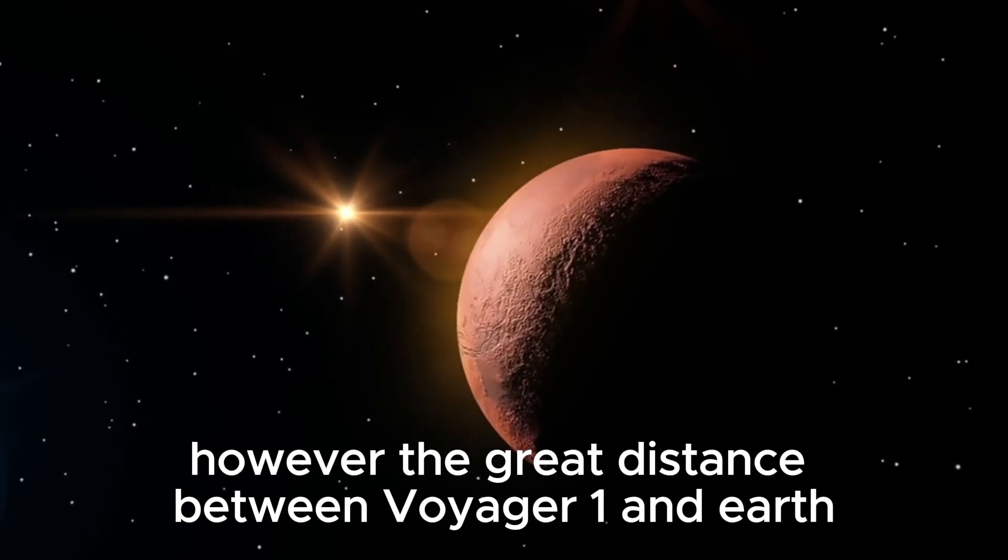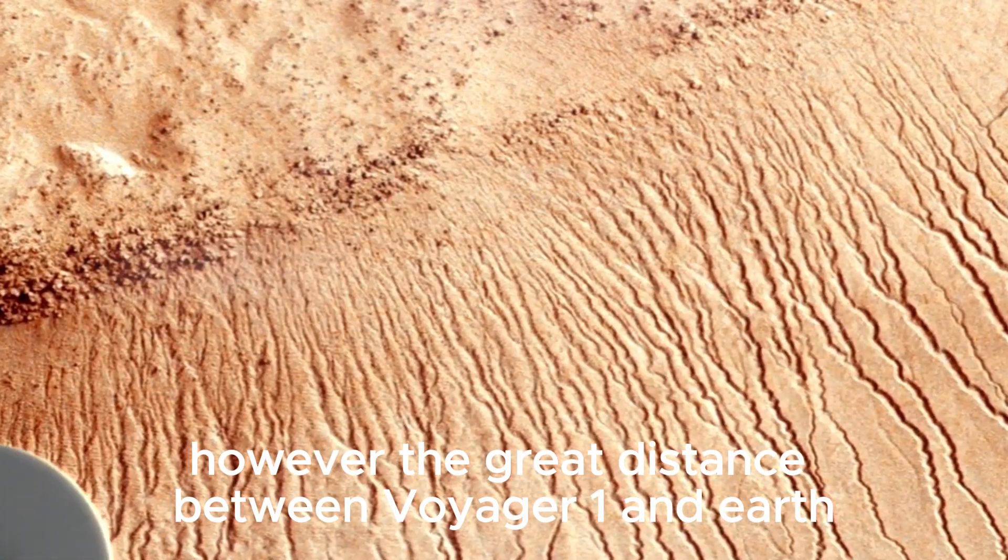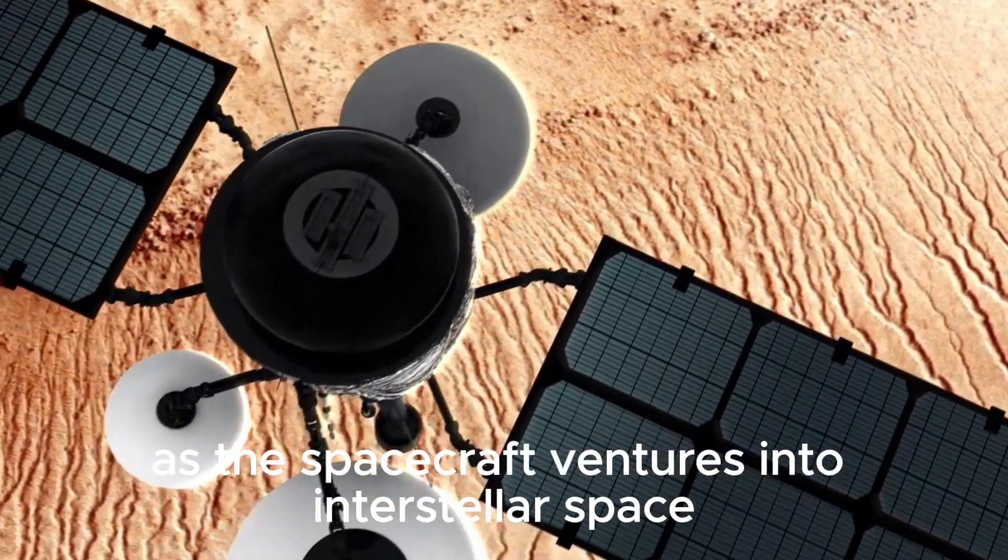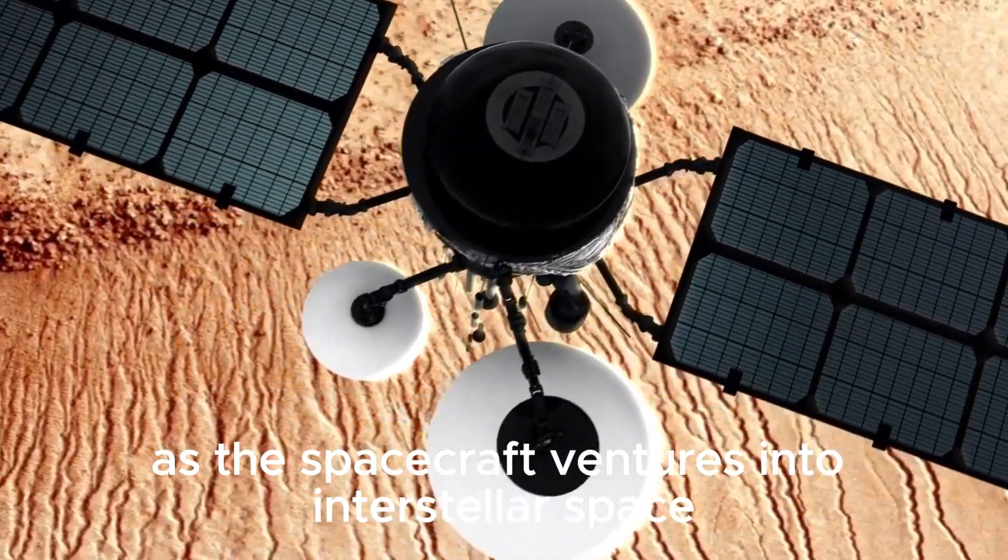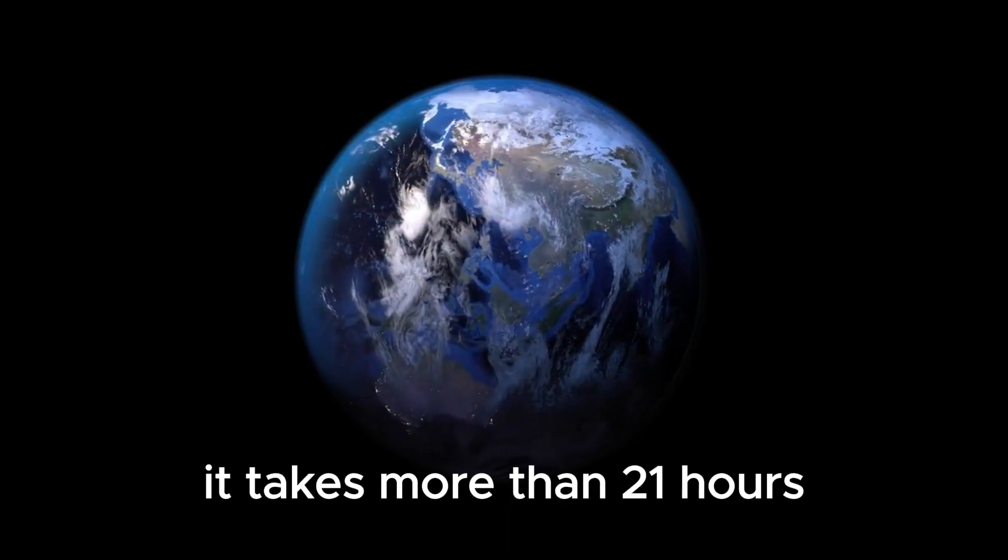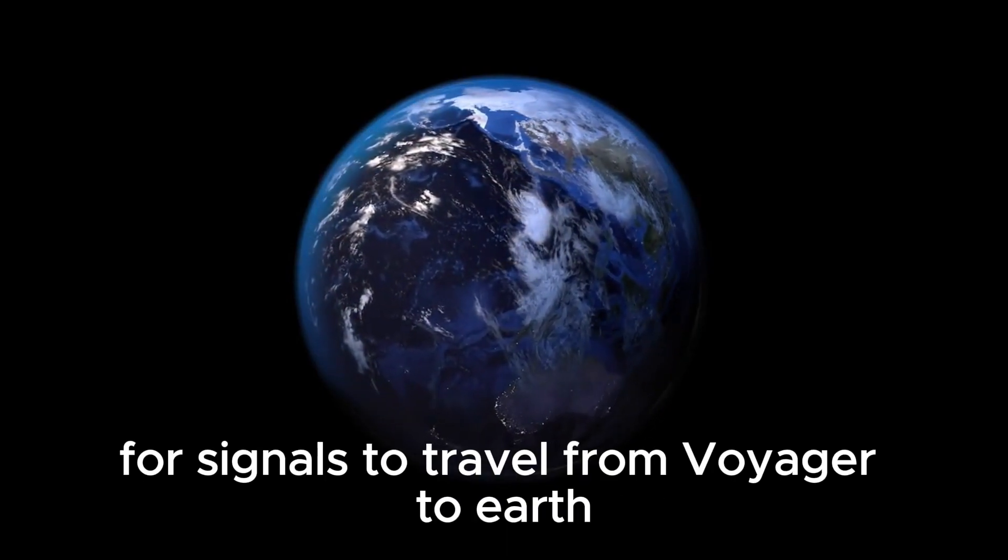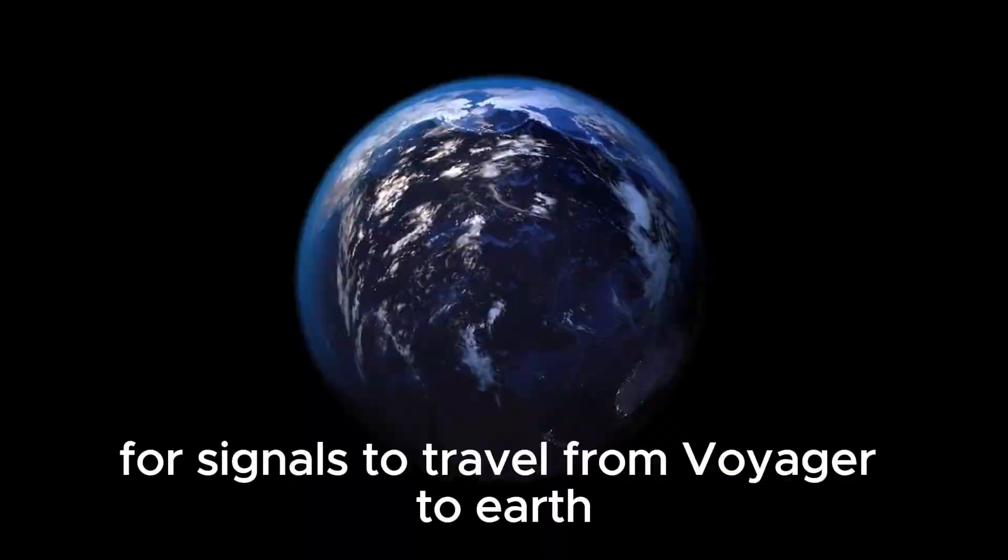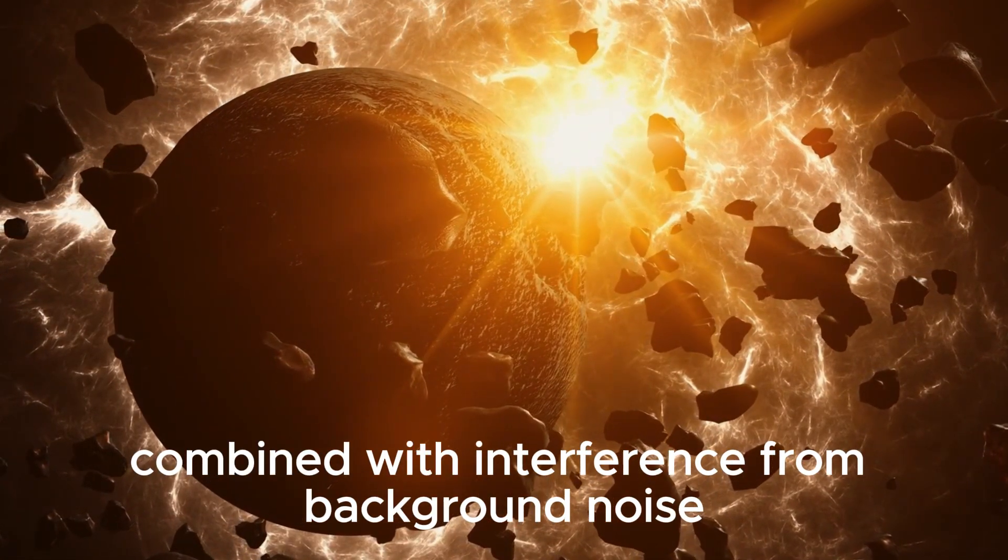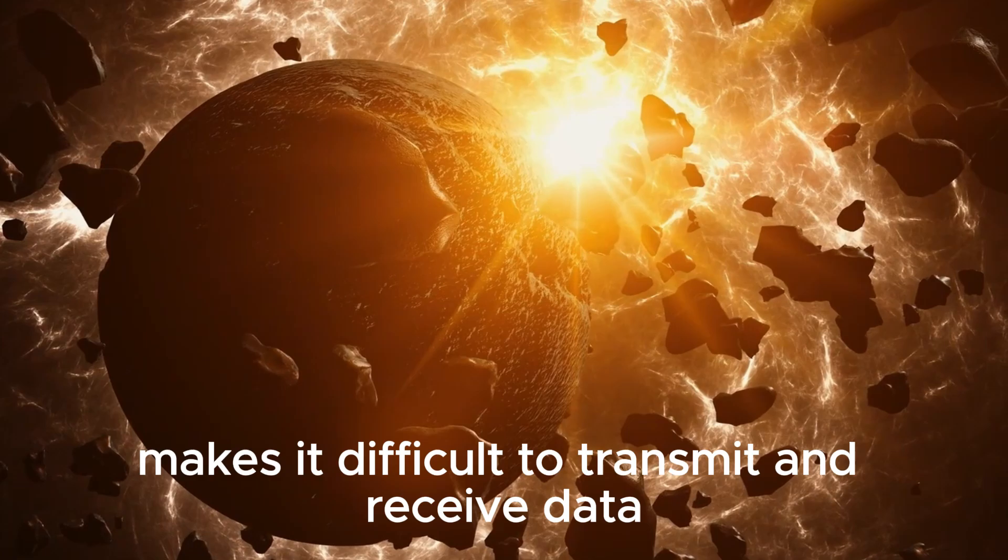However, the great distance between Voyager 1 and Earth presents a significant challenge to maintaining effective communication. As the spacecraft ventures into interstellar space, Voyager 1's signal strength has weakened. It takes more than 21 hours for signals to travel from Voyager to Earth. The weak signal, combined with interference from background noise, makes it difficult to transmit and receive data.